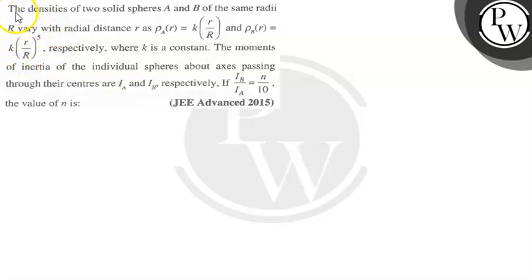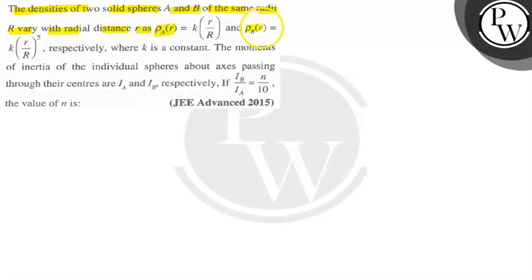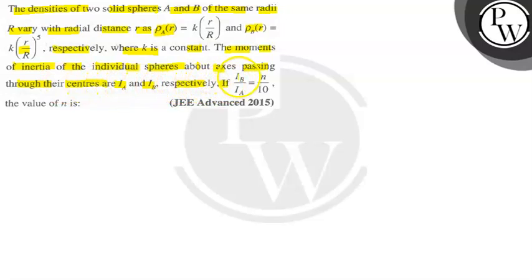Let's read the question. The question says the density of two solid spheres A and B of same radii R, varying with radial distance r. The density of A is ρ_A = k·(r/R), and the density of B is ρ_B = k·(r/R)^5, where k is a positive constant. The moment of inertia of the individual spheres about axes through their centers are Ia and Ib respectively. If Ib/Ia = n/10, calculate the value of n.